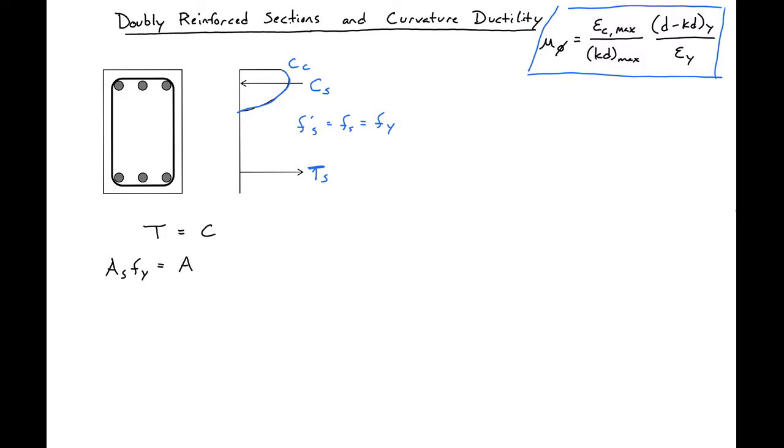and our compression now is A prime S F prime Y plus 0.85 F prime C B times beta 1 C.